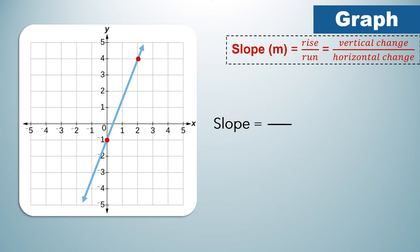Let us start counting: 1, 2, 3, 4, 5. The vertical change is 5.